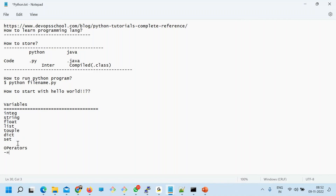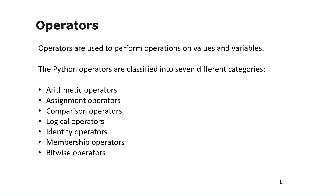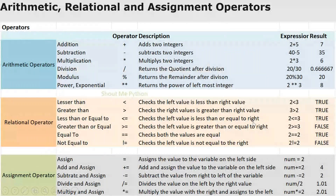In Python we have: arithmetic operator, assignment operator, comparison operator, logical operator, identity operator, membership operator, and bitwise operator. In arithmetic operators, you have addition, subtraction, multiplication, division, modulus, and power. The relational operators include less than, greater than, and less than or equal to — more or less common to any programming language.